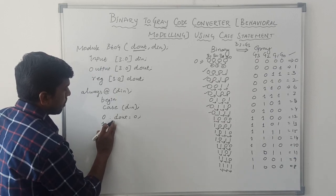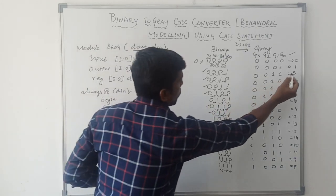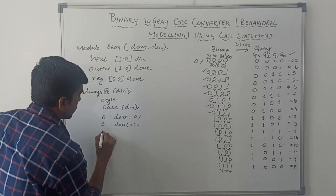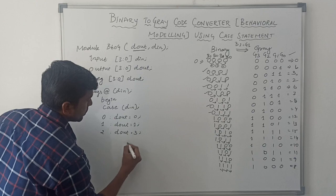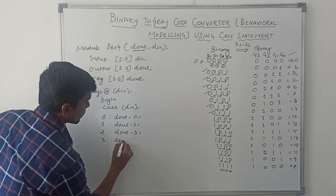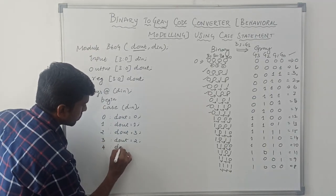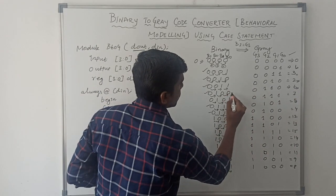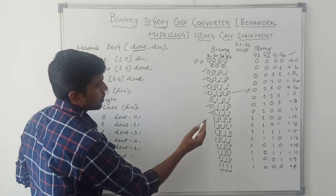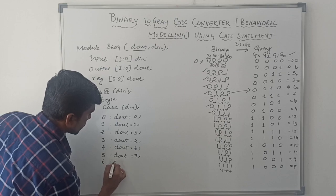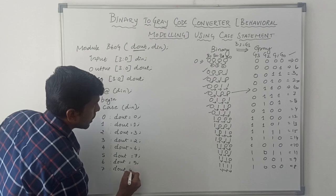The second case is 1: binary 0001, so dout equals 1. Then case 2: dout equals 3. Case 3: dout equals 2. Case 4: dout equals 6. Case 5: dout equals 7. Case 6: dout equals 5. Case 7: dout equals 4.